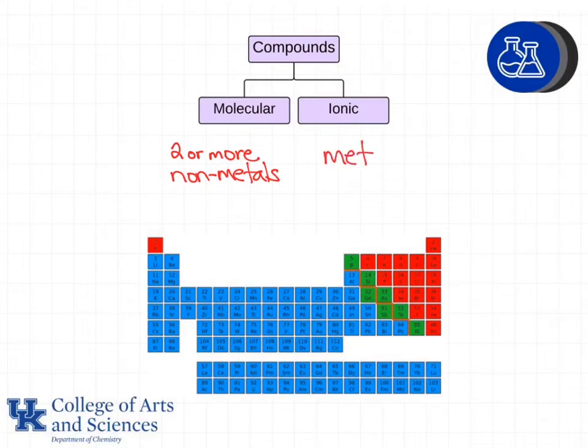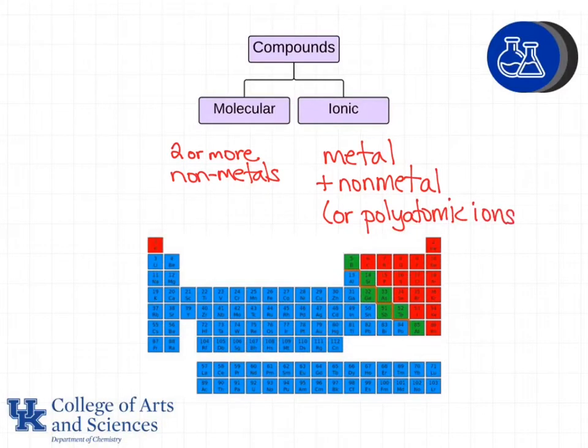An ionic compound is a metal and a nonmetal or it may involve polyatomic ions. Those polyatomic ions could be a cation or an anion. Our metals are on the left side of the periodic table, shown here in blue. Remember that hydrogen is not a metal even though it's on the left side. The elements in green are metalloids. We won't be worried about compounds formed from those for the purposes of identifying molecular versus ionic.